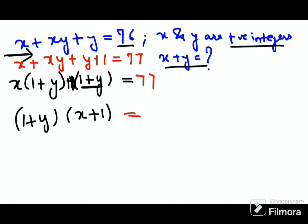So now you will get (1 + y)(x + 1) = 77. Now understand, 77 here - instead of writing 77 we will put factors. We have 1 × 77 and the next one is 7 × 11.